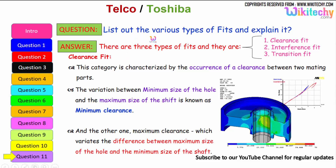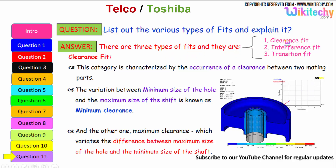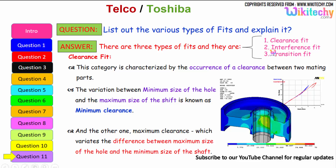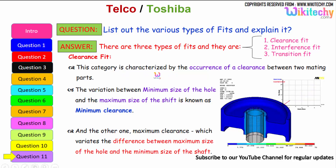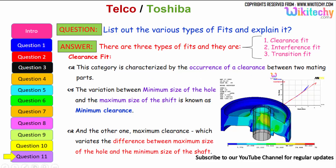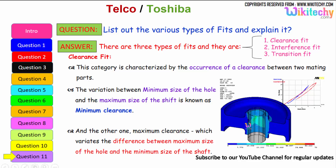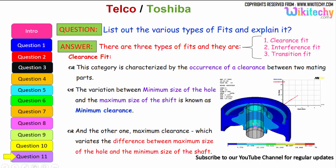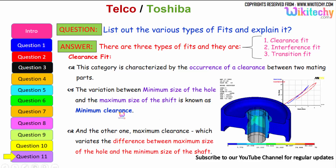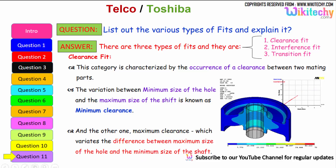Let us see the final question: list the various types of fits and explain them. There are three types of fits: clearance fit, interference fit, and transition fit. The clearance fit is characterized by the occurrence of clearance between the two mating parts. The difference between the minimum size of the hole and the maximum size of the shaft is known as minimum clearance, whereas maximum clearance is the difference between the maximum size of the hole and the minimum size of the shaft.